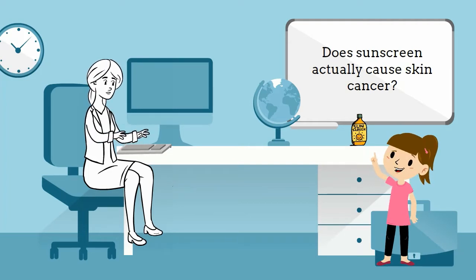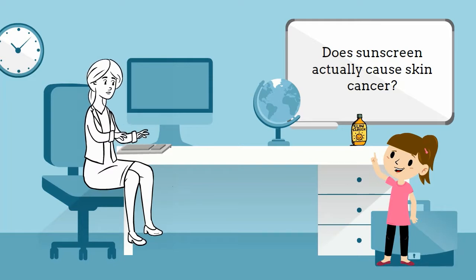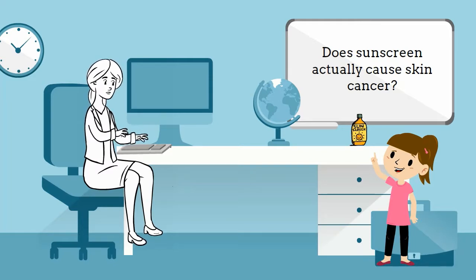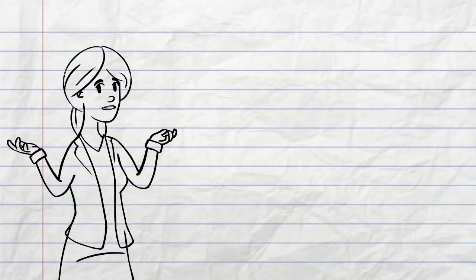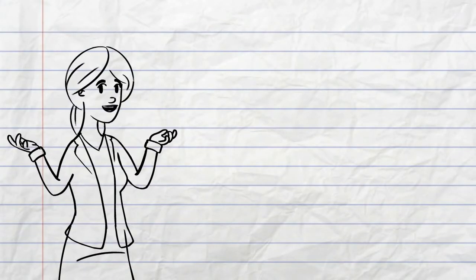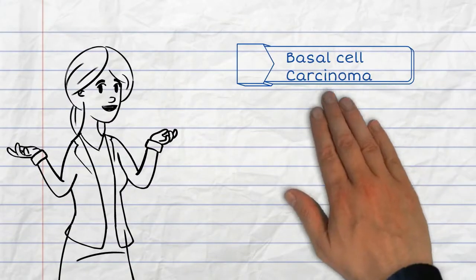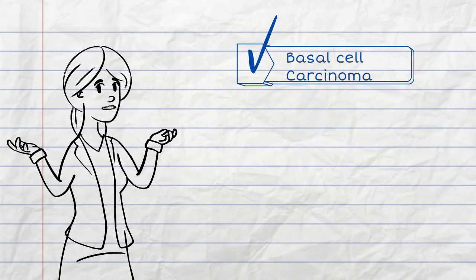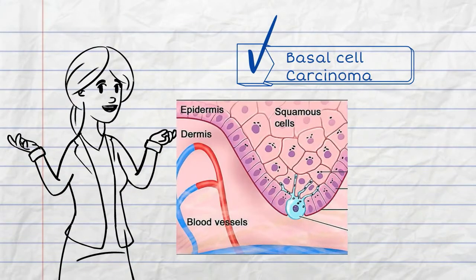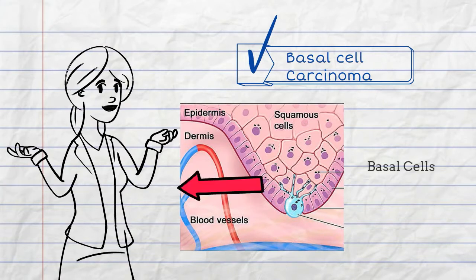Okay Charlie, let's not get ahead of ourselves and allow our imaginations to run wild. Let's start off with the basics and go from there. There are three common types of skin cancer. The first is basal cell carcinoma, a cancer that grows within the basal layer of the epidermis.